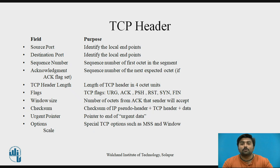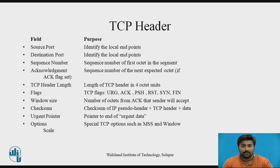The 6-bit flag field is used to relay control information between TCP peers. The possible flags include URG, ACK, push, reset, sync, and finish. The URG flag signifies this segment contains urgent data; when this flag is set, the urgent pointer field indicates where the non-urgent data in this segment begins. The acknowledgement flag is set any time the acknowledgement field is valid, implying that the receiver should pay attention to it. The push flag signifies that the sender invoked the push operation, indicating to the receiving side of TCP that it should notify the receiving process. The sync and finish flags are used when establishing and terminating a TCP connection respectively.